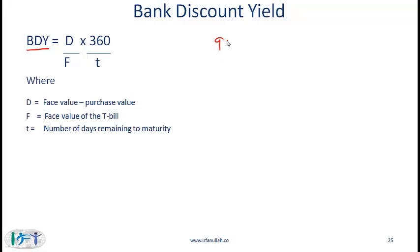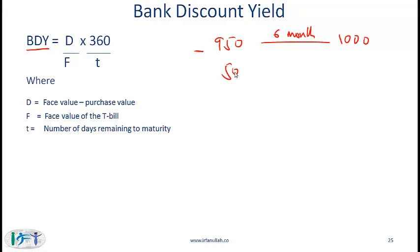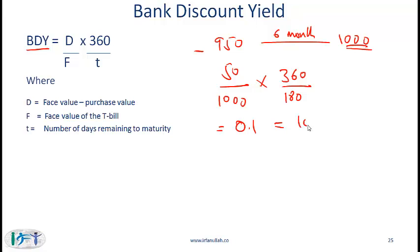Let's say the government issues a bond for $950 — that is how much investors pay — and the face value is $1,000, meaning that after six months the investor will get $1,000. Using the bank discount yield formula, the discount is $50, divided by the face value of $1,000, then multiplied by 360 over 180 days. Six months means 180 days, taking 30 days per month. Doing the calculation gives 0.10, which equals 10% — the bank discount yield.